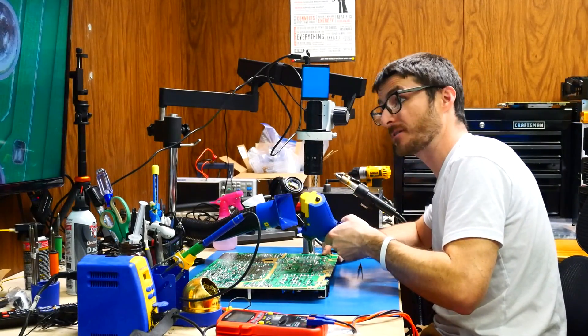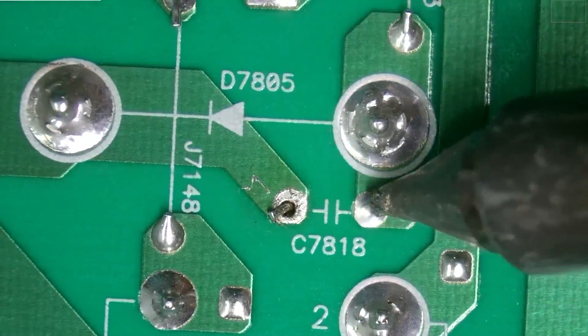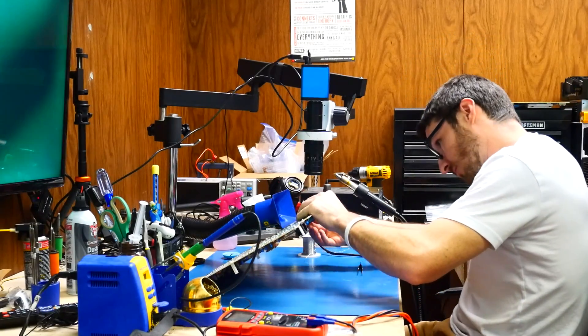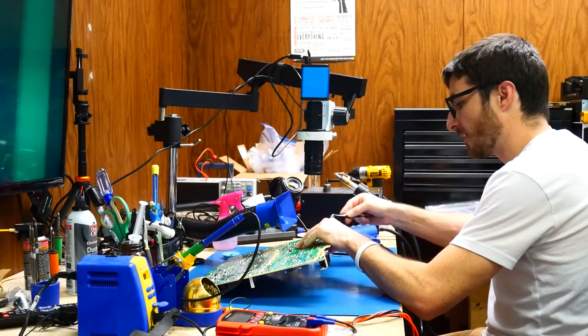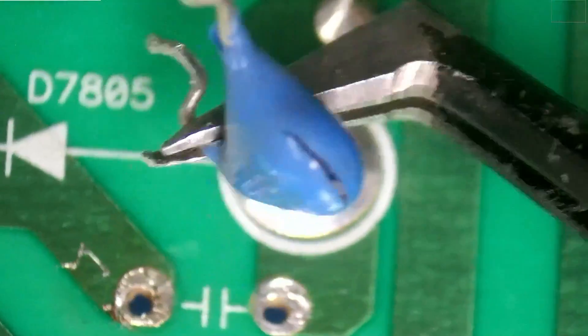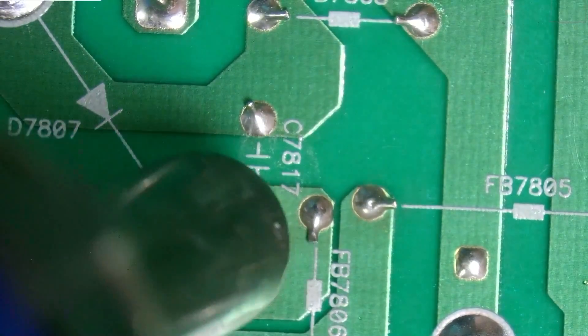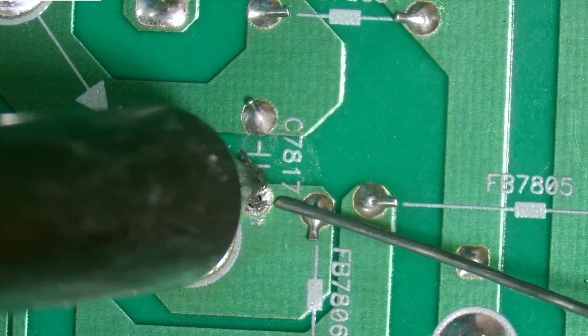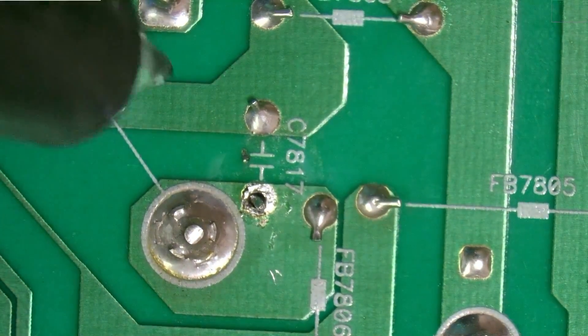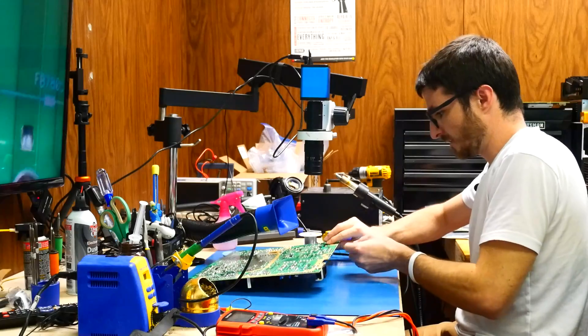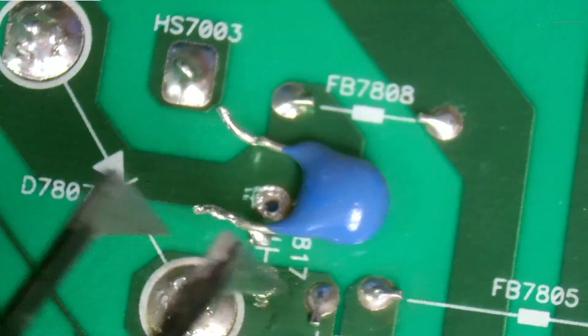Next, we're going to do our capacitor that was actually physically damaged, and that was the C7818. We should be able to wiggle that one out. There we go, and there's our capacitor. Again, this was the damaged one. Now we have the equivalent on the other side over here, so let's go ahead and remove that one next. We should be able to pull that one through. There we go. So there's our another capacitor here.